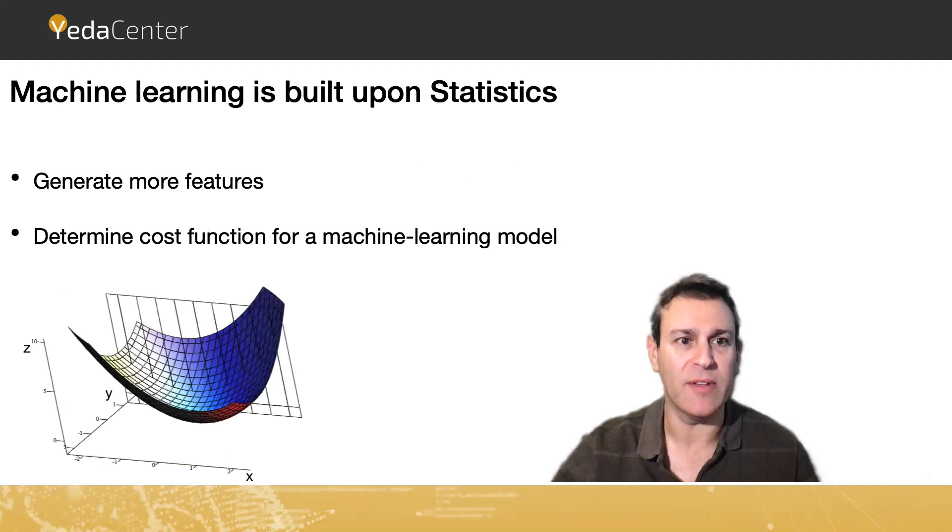So machine learning is built upon statistics. Using statistics is really important for us. One thing is that we can use it to generate more features like taking an average or a moving average and to use it in our model. Another thing that is really important is while we understand with statistical tests where the data came from and what's the distribution of the data, we can generate more valid and a better cost function because we use hypotheses in order to generate our functions. And this function is built upon mathematical function and we take into account some statistics knowledge during the research. This is why it's really important.